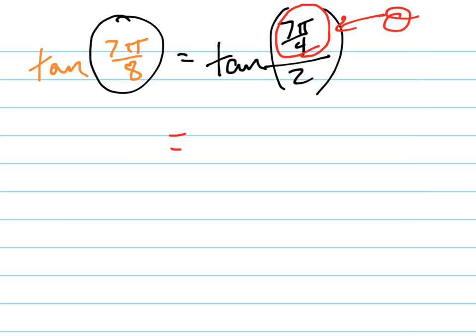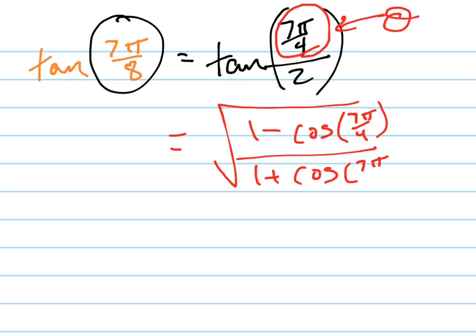So this equals the square root of (1 - cos(7π/4))/(1 + cos(7π/4)). Now I don't know if it's plus or minus. I'll figure that out in a second.